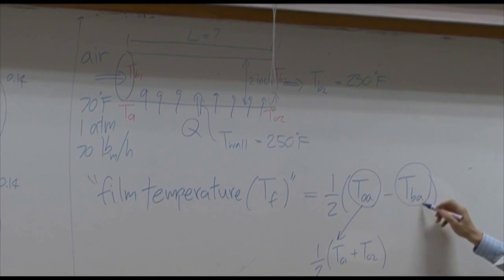On the other hand, Tba is the average bulk temperature. The bulk for inlet is TB1. The bulk for outlet is TB2. You take the average, you get the TB average.